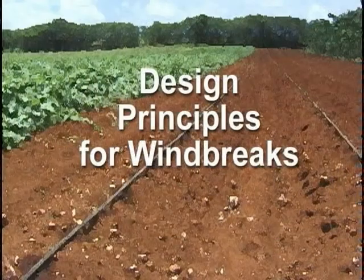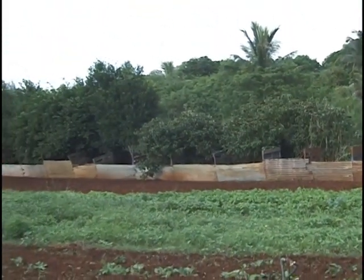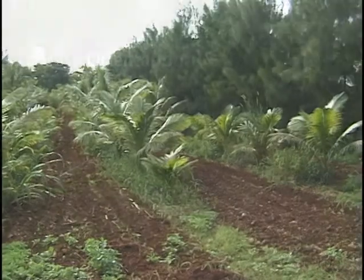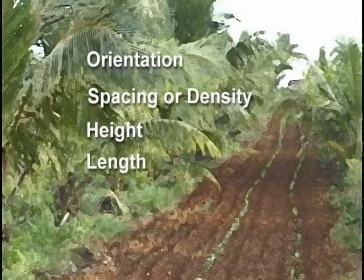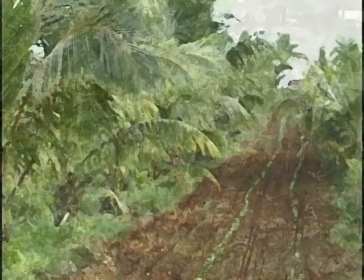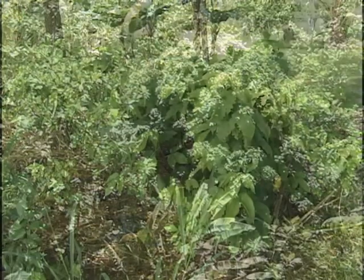First, we'll look at some of the basic design principles. There are a number of variables that must be considered in designing a windbreak. Essential physical characteristics to consider in the design process include orientation, spacing or density, height in relation to area protected, length, number of rows, and continuity. Appropriate species of trees and shrubs are also an important factor and will be considered later.